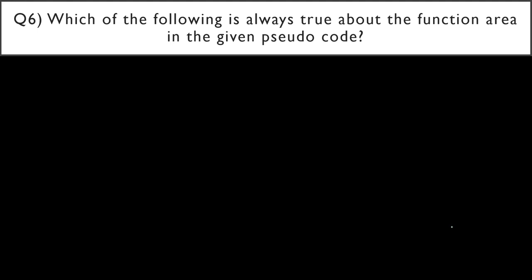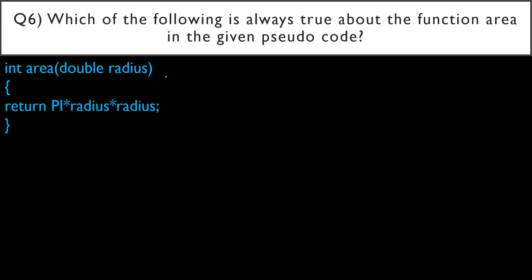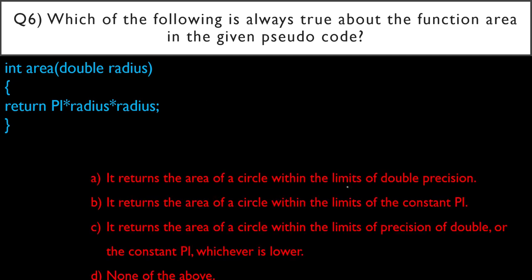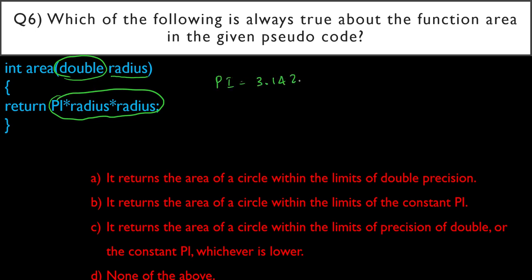Question six: Which of the following is always true about the function 'area' in the pseudocode? int area(double radius) returns pi * radius * radius — that's the area of a circle. Options: A) returns within limits of double precision, B) returns within limits of constant pi, C) returns within limits of double or pi whichever is lower, D) none of the above.